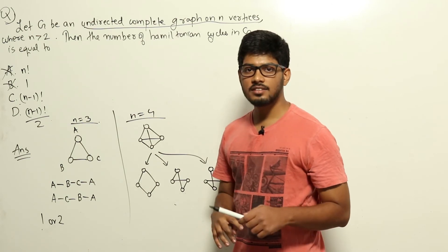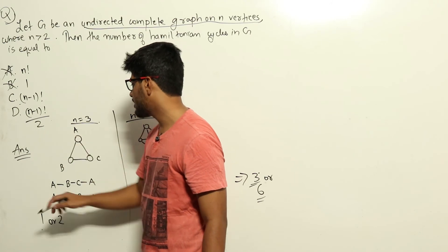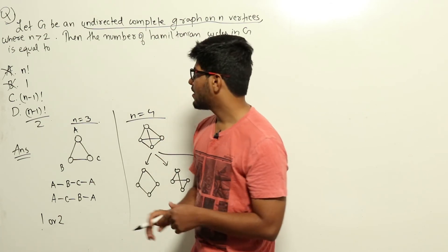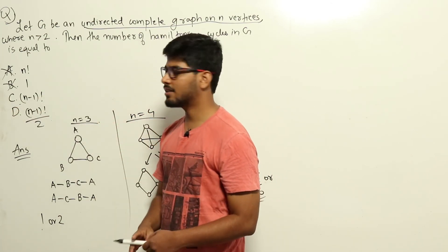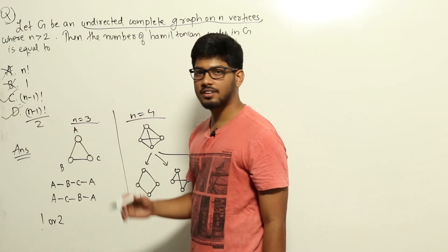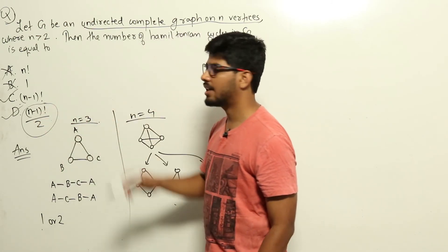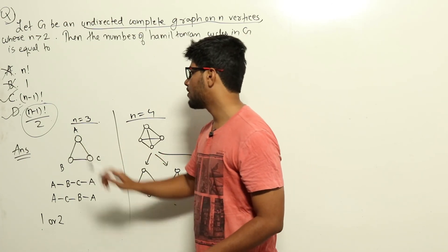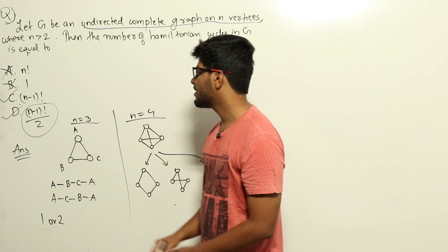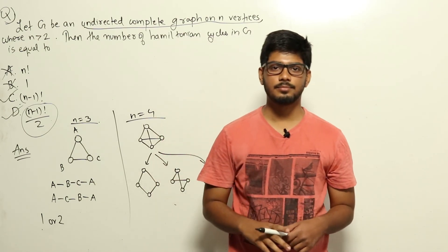In the GATE exam where this question appeared, the official answer was (n-1)!/2. However, people challenged this, and option C — (n-1)! — was also accepted by GATE authorities. In general, since the graph is not specified as labeled, we should not assume the reverse is a different cycle, so go with (n-1)!/2. But in that particular GATE year, both answers were accepted.